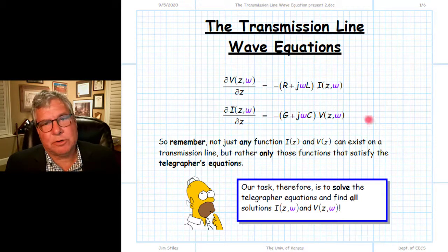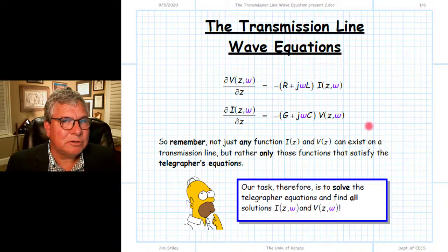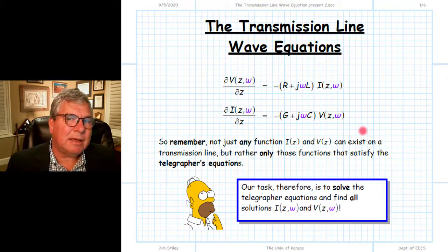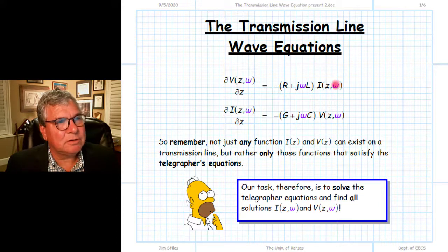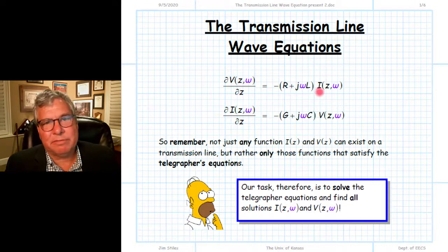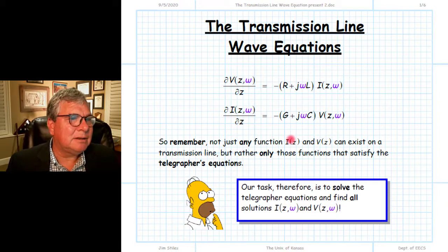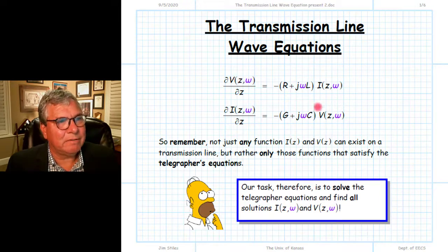Oftentimes students are a little unsure what to make of these differential equations and how to use them. They're not really written in an operator form where we can put in some source and get a resulting field, voltage, or current. What we're saying with these differential equations — just like Maxwell's equations, which are also differential equations — is that only functions of voltage and current that satisfy these two equations simultaneously can physically exist. I can write down any arbitrary function of V and I with respect to position Z, but it would be very unlikely that they would satisfy either one of these two equations, let alone both of them.